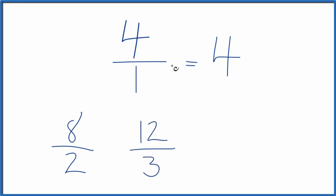Let's do one more. How about 7? Multiply the numerator and denominator by 7. 7 times 4, that's 28. 7 times 1 is 7. And these are all equivalent fractions for 4 over 1, or just the whole number 4.